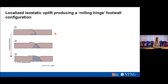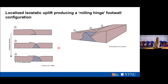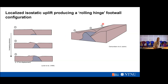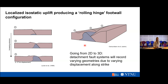As this is in two dimensions, what would this look like if we were to look at it in three dimensions? Knowing that fault segments have fault tips and an area of maximum displacement, we can try to stack these along strike laterally, and we might get a configuration where, as we move towards the area of maximum displacement, we might encounter this rolling hinge model. Meaning that going from 2D to 3D, detachment fault systems will record varying geometries due to varying displacement along strike.